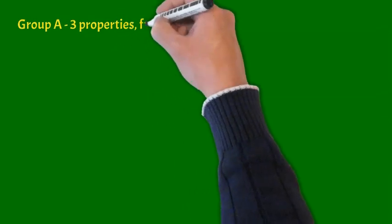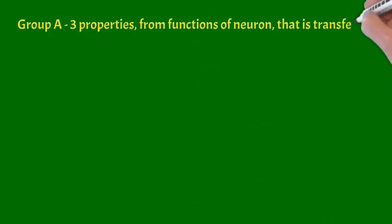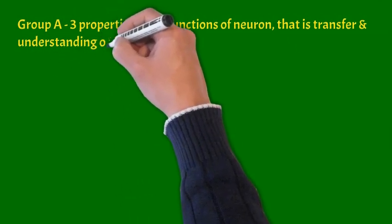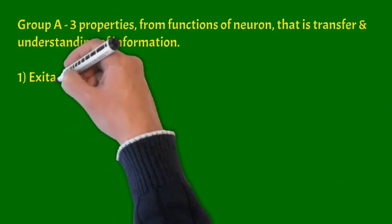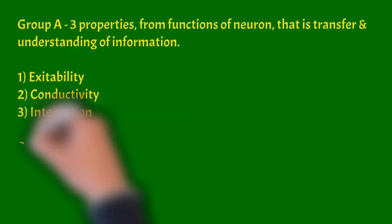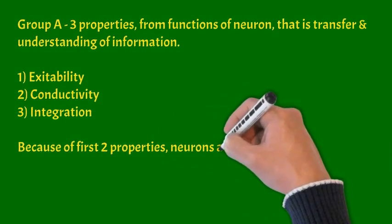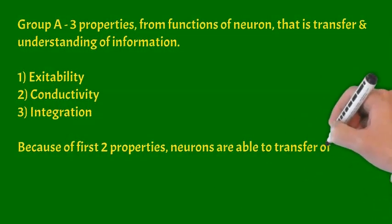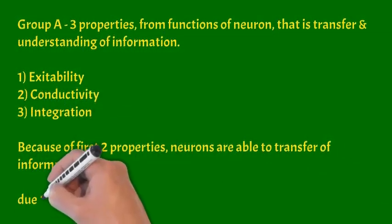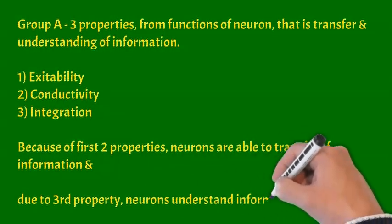Let us see Group A first. Three properties by function of neuron we can derive. Function of neuron is transfer and understanding of information, and these three properties by this are excitability, conductivity, and integration. Because of first two properties, excitability and conductivity, neurons are able to transfer information. And by third property, integration, neurons understand information.